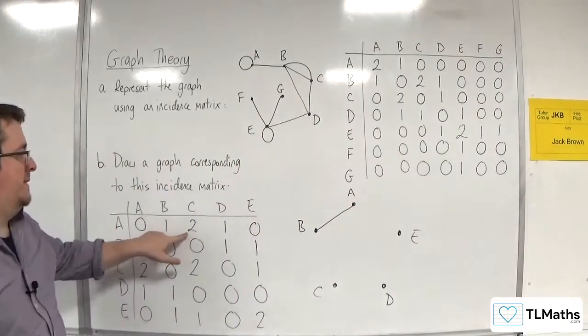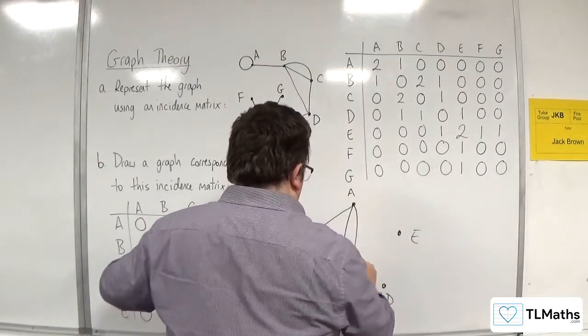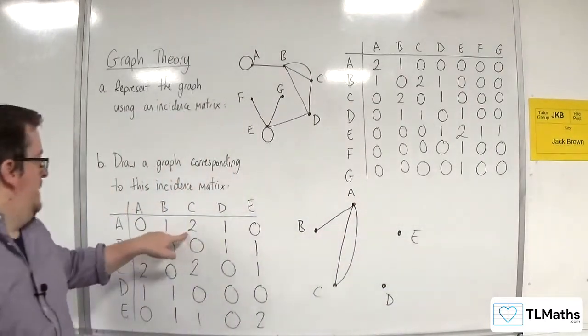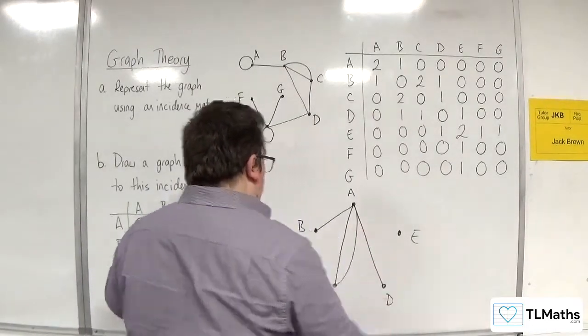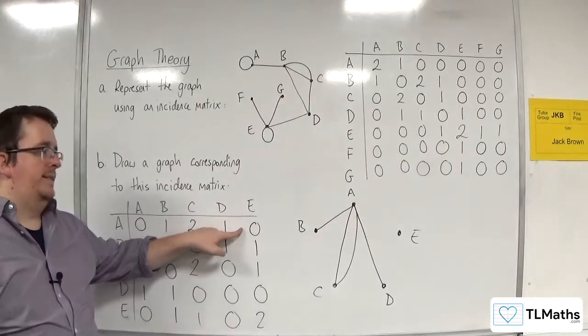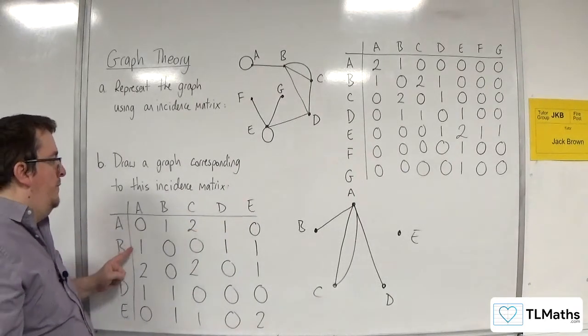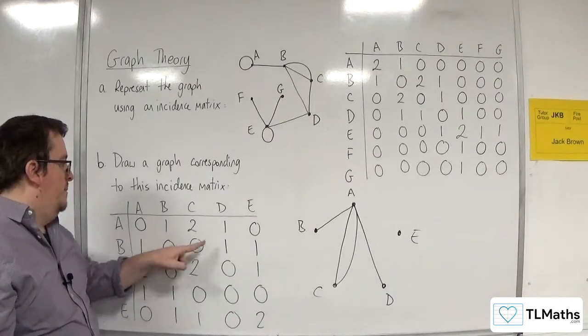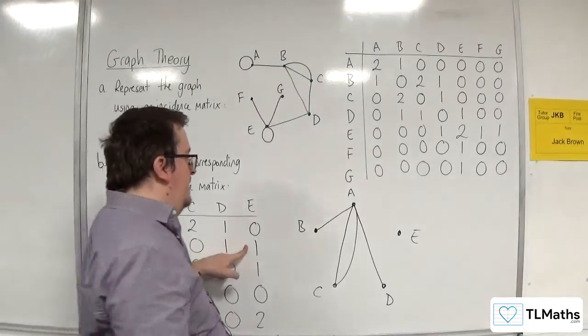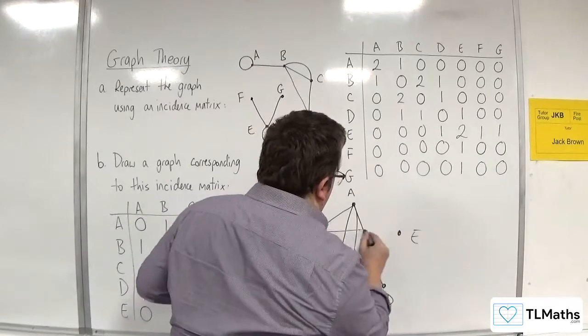A is not connected to itself. A is connected to B by one edge, to C by two edges, and to D by one edge. A is not connected to E. We've done B connected to A. B is not connected to itself or to C. B is connected to D and E.